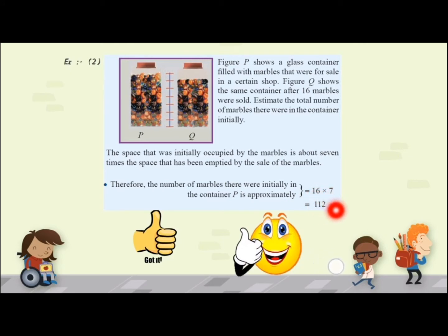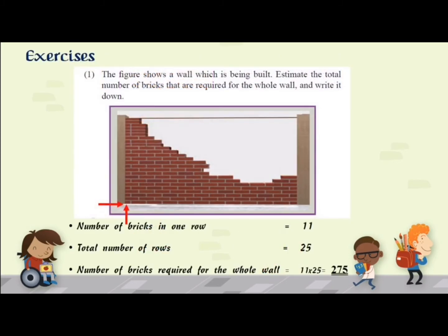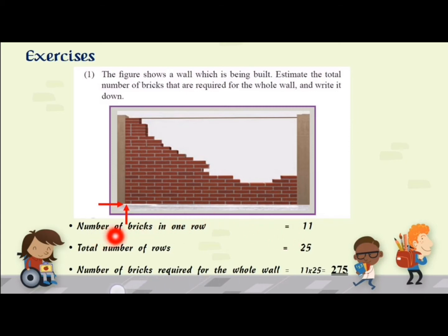Let's do some exercises. The figure shows a wall which is being built. Estimate the total number of bricks required for the whole wall. First, find the number of bricks in one row by counting — it is 11. Then find the total number of rows by counting; you can find it is 25. So the number of bricks required for the whole wall is 11 times 25, which equals 275.